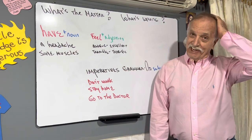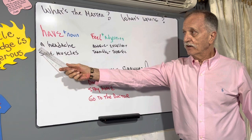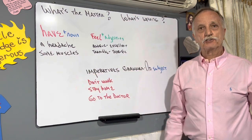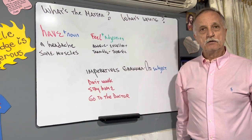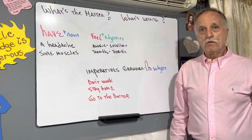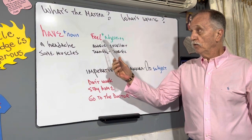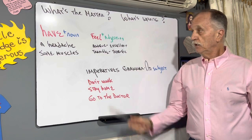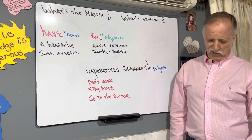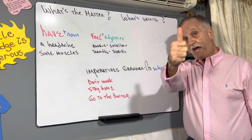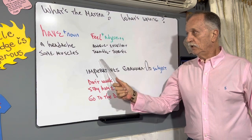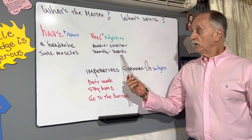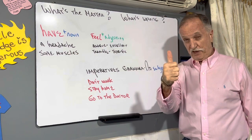I have a headache — it's singular. I have sore muscles — it's plural. With the verb 'feel', we use an adjective. I feel awful. I feel excellent. I feel terrible. I feel terrific.